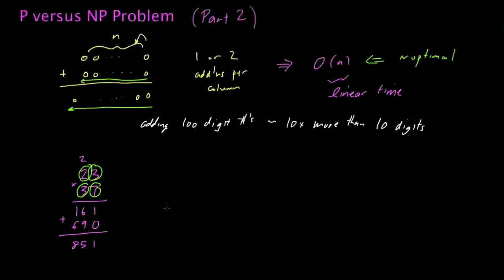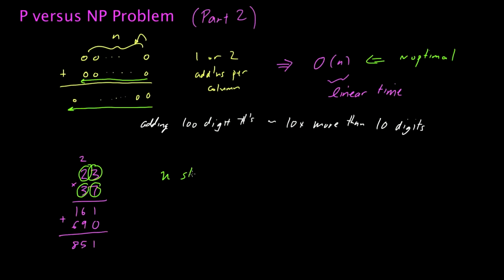For example, I took the 7 here and multiplied it by both 3 and 2. Then I took the 3 and multiplied it by 3 and 2 as well, and then I added everything up. So effectively, for every single digit, I needed n steps, or roughly a linear number of steps per digit, because each digit had to be multiplied by every other digit. Since I have n digits total, since I have to repeat this process for each digit, the total number of steps is going to be about n squared.